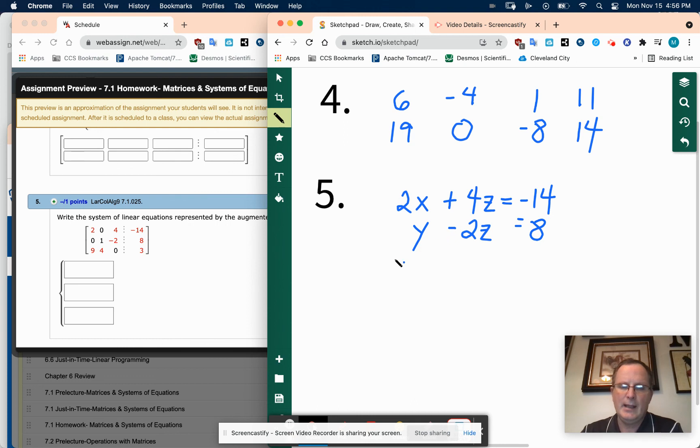And the bottom one is 9Xs, 4Ys, no Zs, equals 3. So that's what you're typing in those three boxes. That's it for 4 and 5.